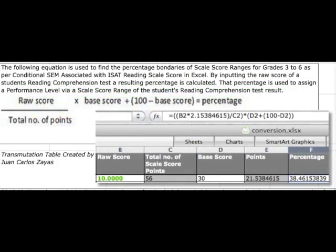These entries are transmuted using the following Excel transmutation formula. This formula is used in the conversion of a raw score into a percentage grade equivalent.